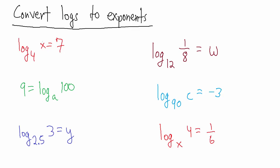Here we have the base 4 logarithm of x equals 7. If we want to convert that to exponential notation, the base is 4. Remember, a logarithm is just a fancy way of saying exponent. So if the base 4 log of x is 7, that means 7 is the exponent and 4 is the base — the base in a logarithm is the same as the base in the exponent. So that's going to be 4 to the 7th equals x.